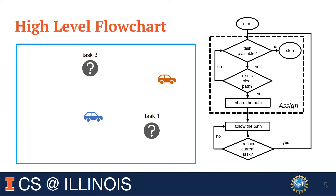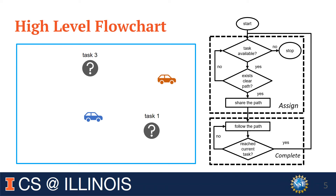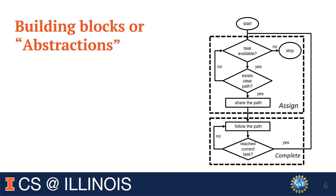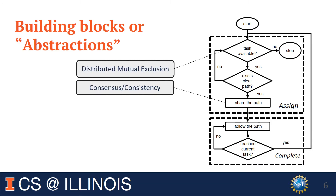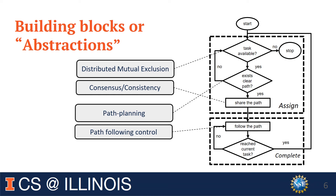We can roughly see the upper part of the flowchart is when a task is assigned to a robot, and the lower part is when the robot is trying to complete a task. This straightforward design, however, requires several building blocks: checking the availability of a task requires mutual exclusion between robots; finding a clear path requires sensing and path planning; following the path requires path following and control; and sharing paths with other robots requires reliable communication.